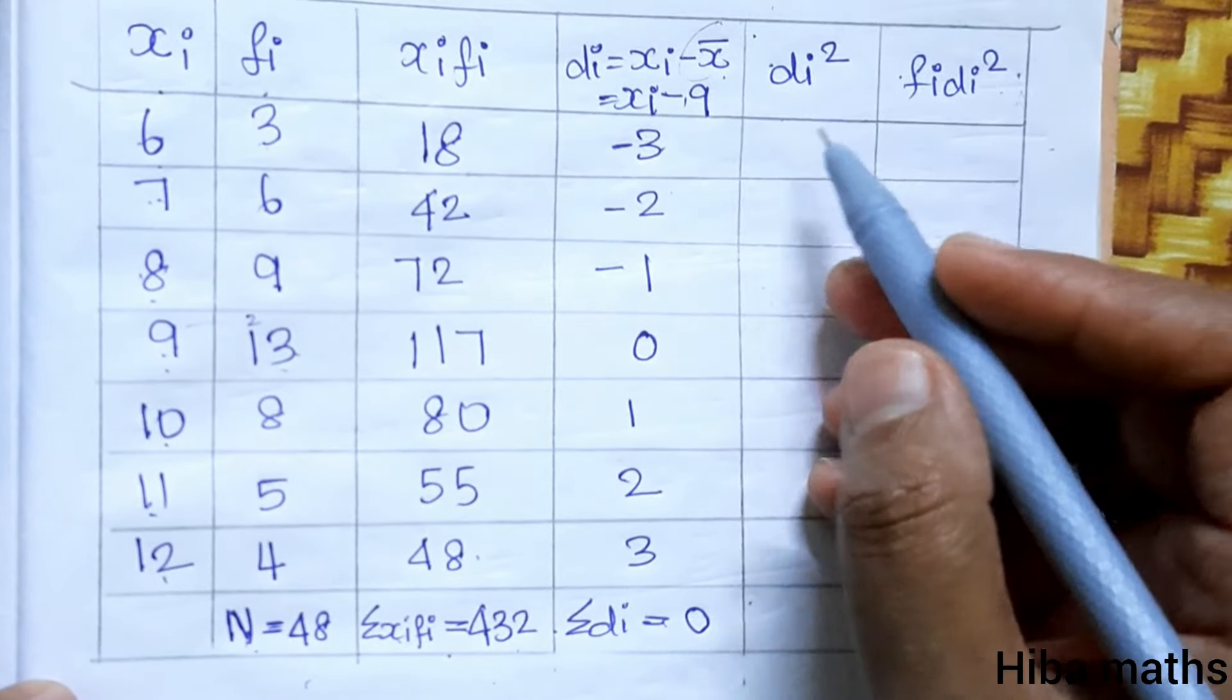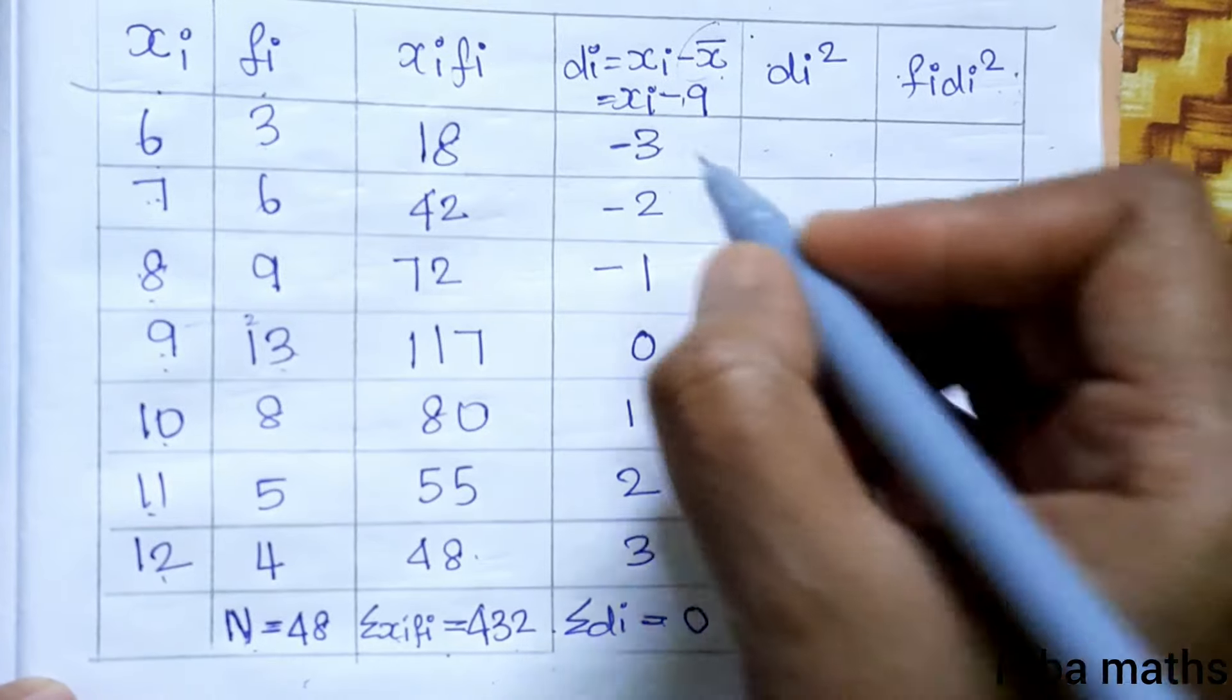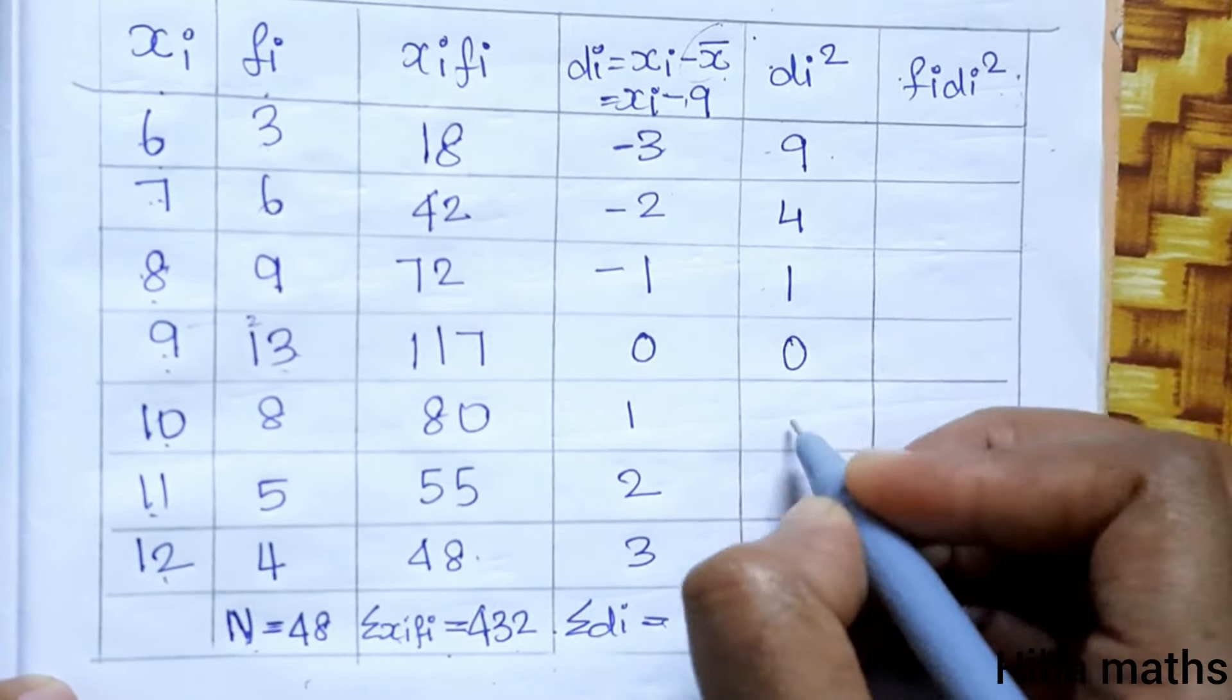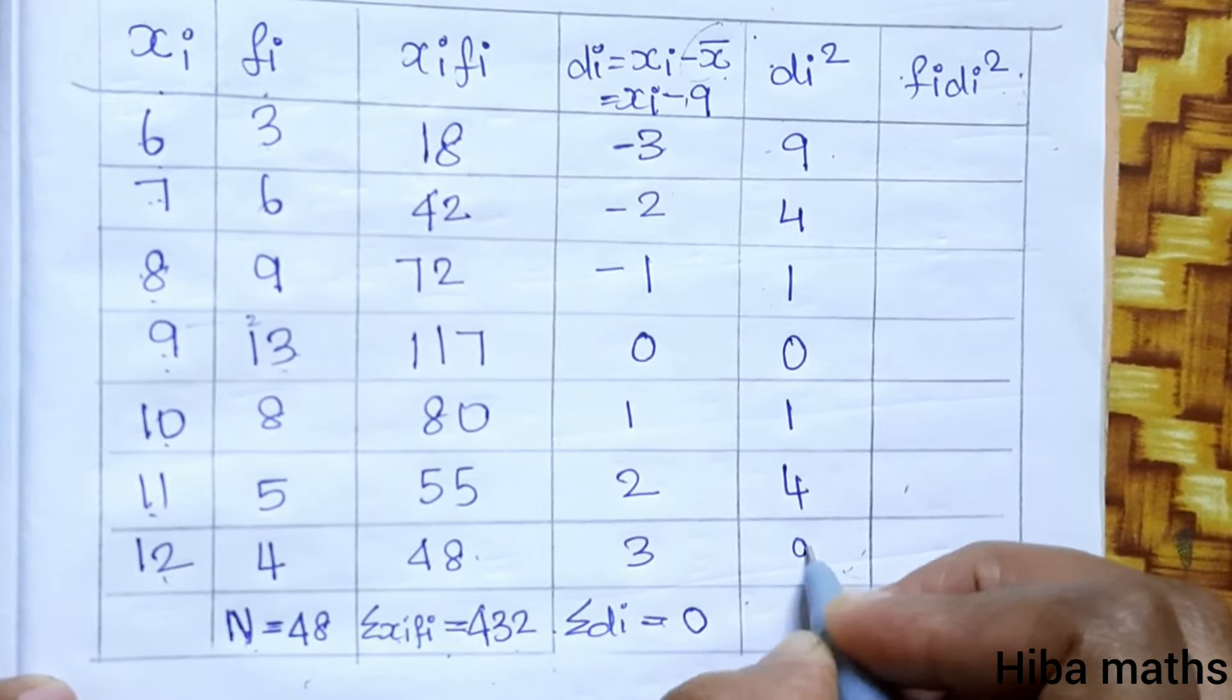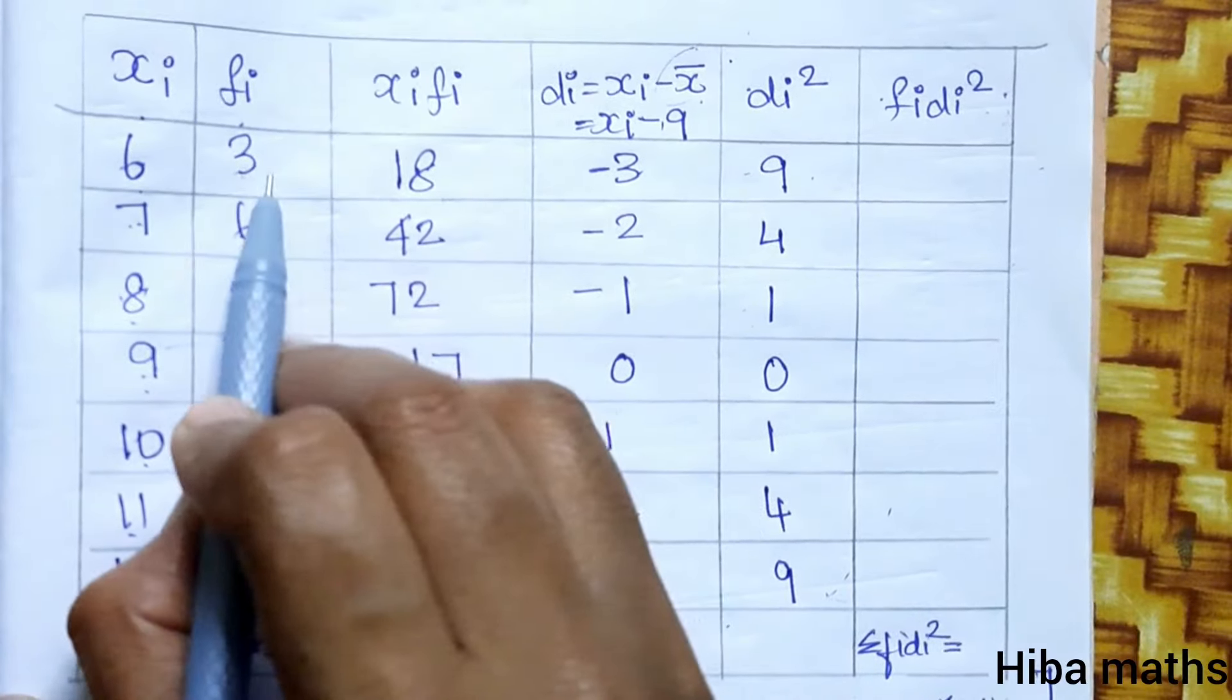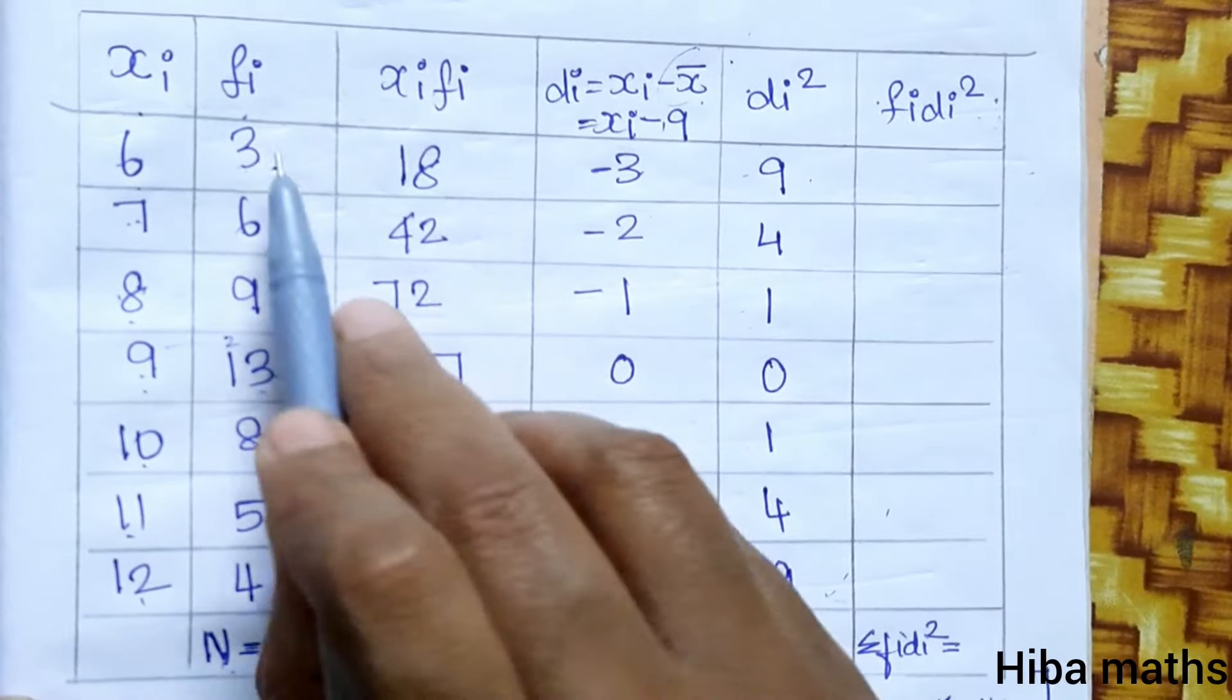Now add the di square column. Three times three is nine. Two times two is four. One times one is one. Then zero, one, four, and nine. Now for the column fi into di square, we multiply fi and di square.